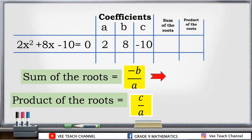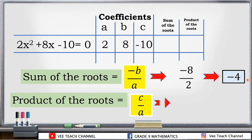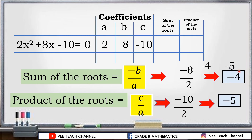Let's do one more: 2x squared plus 8x minus 10 is equal to 0. Our a is 2, b is 8, and c is negative 10. For the sum, negative b over a: negative times 8 over 2 simplifies to negative 4. For the product, c over a: negative 10 over 2 simplifies to negative 5. Therefore, the sum is negative 4 and the product is negative 5.